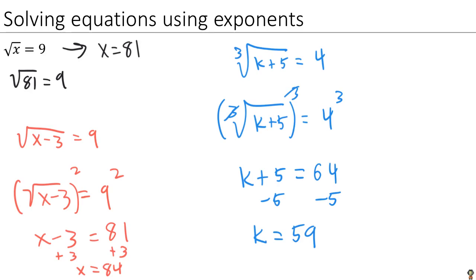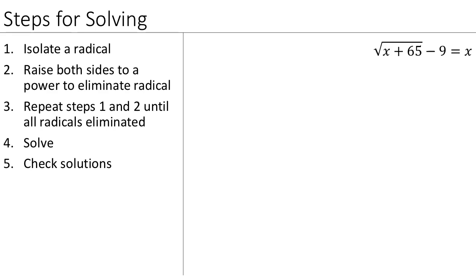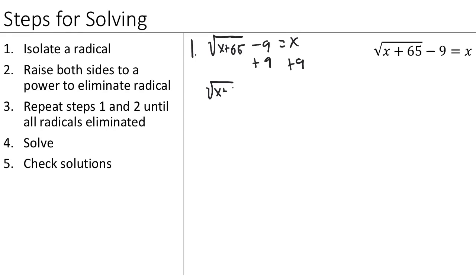Those examples were pretty straightforward, but they're not always this simple. Let's go through some formal steps to solve any radical equation. We'll use them on this equation: the square root of x plus 65 minus 9 equals x. The first goal is to isolate a radical — we want the square root of x plus 65 by itself. So we add 9 to both sides, leaving us with the square root of x plus 65 equals x plus 9.